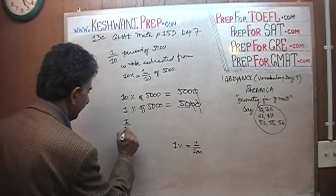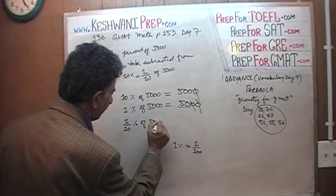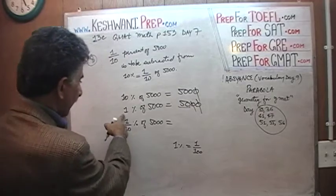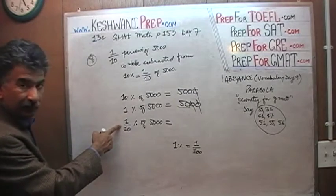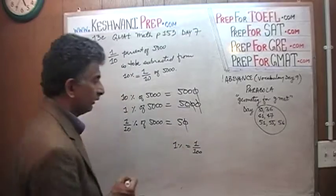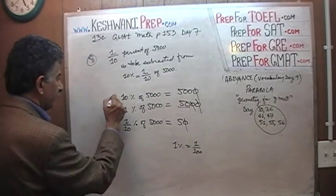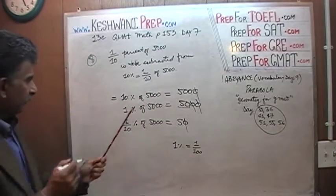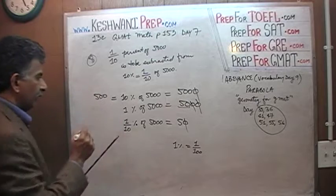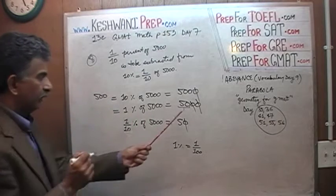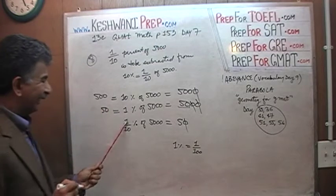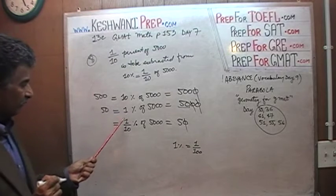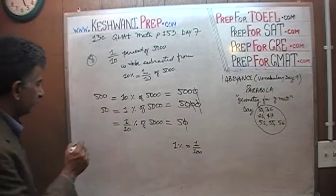Now we figure out one-tenth of a percent of five thousand. One percent of five thousand is fifty. Since we're taking one-tenth of that one percent, we take one more zero out. Ten percent of five thousand is five hundred. One percent is fifty. One-tenth of one percent of five thousand is one-tenth of fifty, which is five.